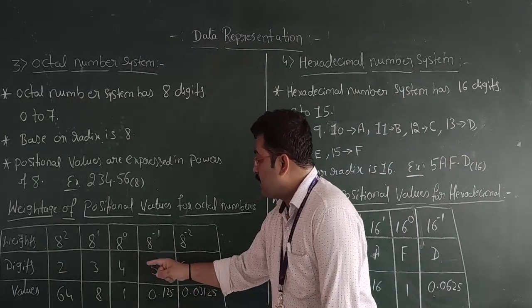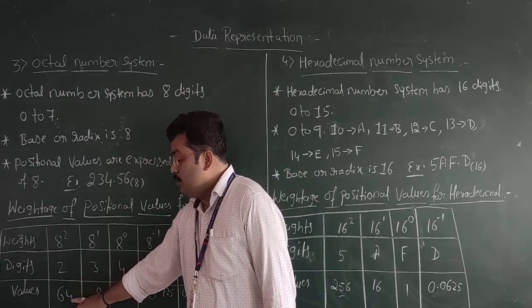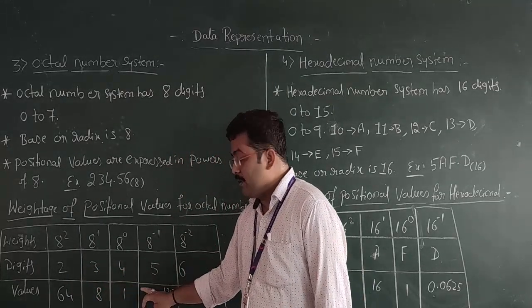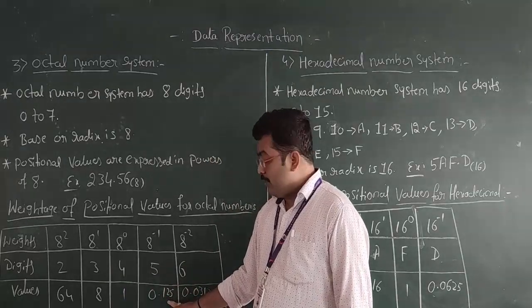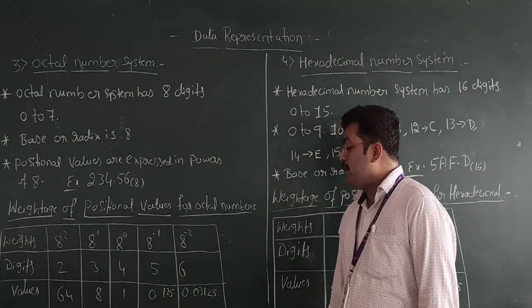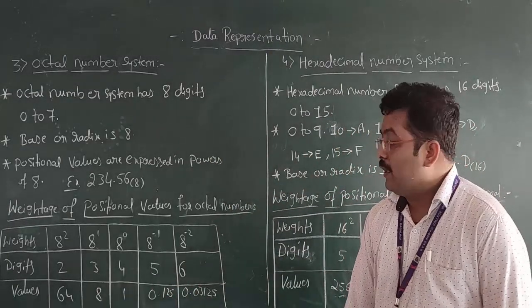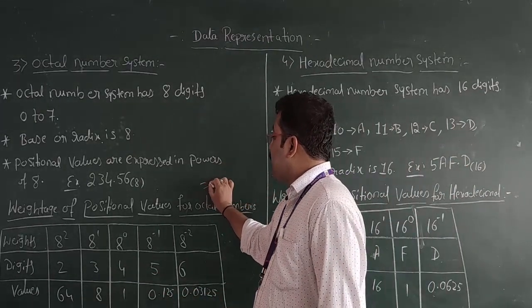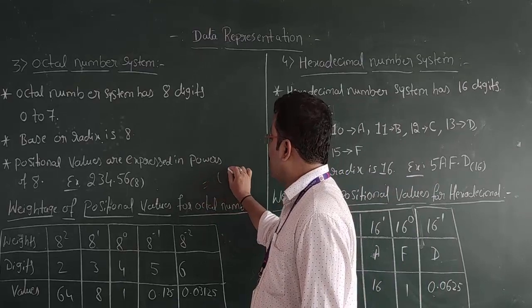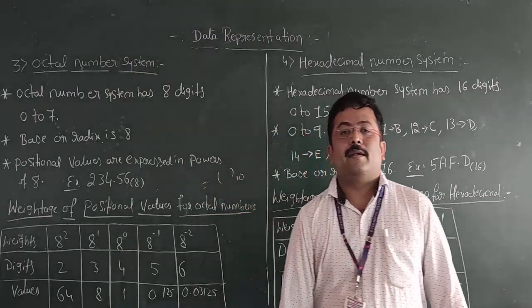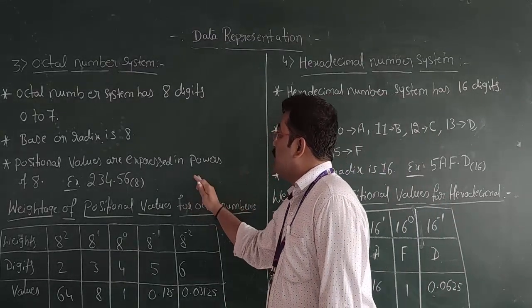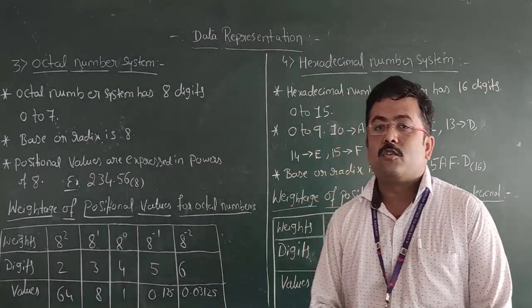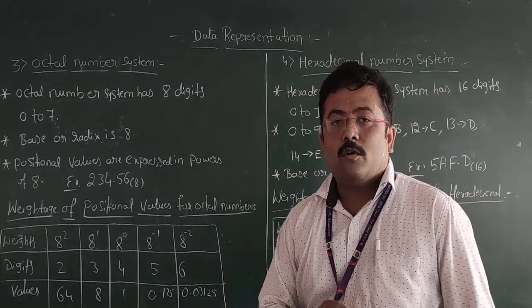So next, we multiply: 2 into 64, 3 into 8, 4 into 1, 5 into 0.125, and 6 into 0.03125. We then add all the results, and the final answer will be the decimal equivalent of the octal number. So this completes the octal number system.